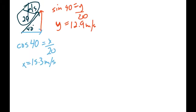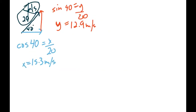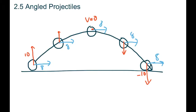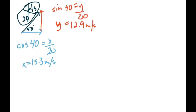Going back to the previous diagram: our horizontal speed of 15.3 stays the same throughout the whole path. Our vertical speed of 12.9 is going to change — it starts at 12.9, slows down until it gets to the peak where it's zero, then speeds back up until it hits the ground going 12.9 downwards. So the first step is always to get those two vectors figured out.